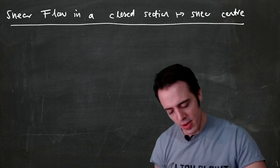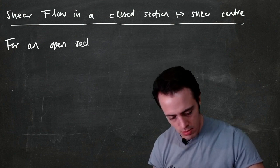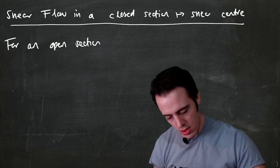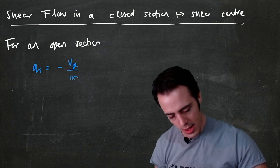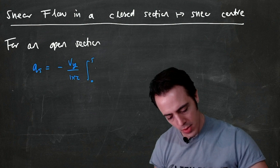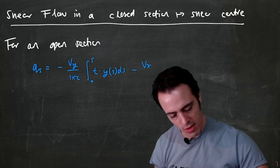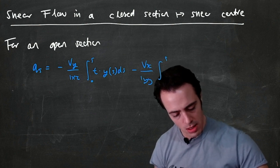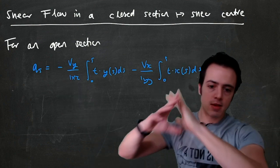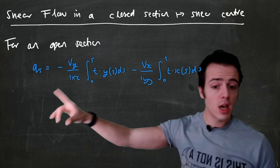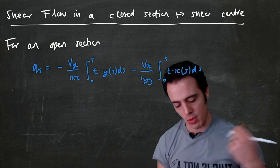The key difference when we had an open section: for an open section, the shear flow distribution qs is equal to minus Vy over Ixx times the integral from 0 to s of thickness multiplied by y as a function of s ds, minus Vx over Iyy times the integral from 0 to s of thickness multiplied by x as a function of s ds. We can use this because the value has to be zero at the start for an open section.